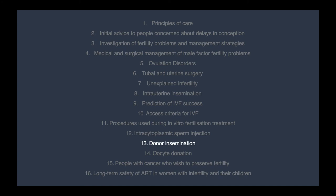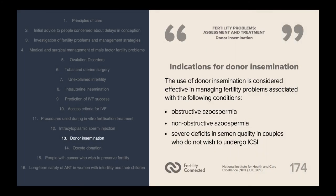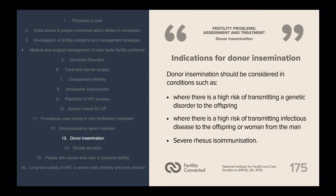Donor insemination is a treatment option for certain couples. The use of donor insemination is considered effective in managing fertility problems associated with obstructive azoospermia, non-obstructive azoospermia, and severe deficits in semen quality in couples who do not wish to undergo ICSI. Donor insemination should also be considered where there is a high risk of transmitting a genetic disorder to the offspring, a high risk of transmitting infectious disease, or in cases of severe rhesus isoimmunisation.